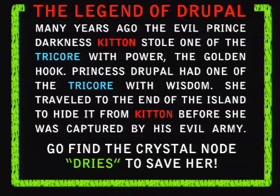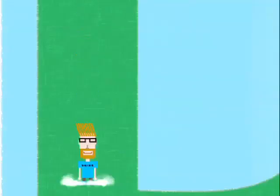Before we move on, let's see where we're going. Many years ago, the evil Prince Joplin's kitten stole one of the tri-force of power, the Golden Hook. Princess Drupal had one of the tri-force of wisdom. She traveled to the end of the island to hide it from kitten before she was captured by his evil army. Go find the crystal node. Our entire journey today is going to be based around finding the crystal node.